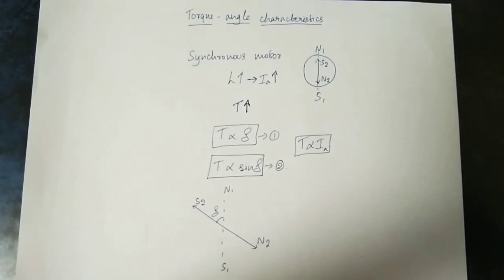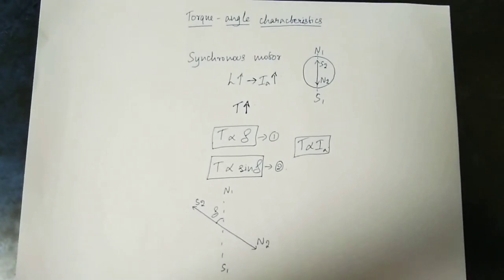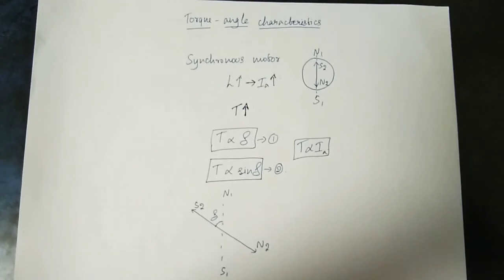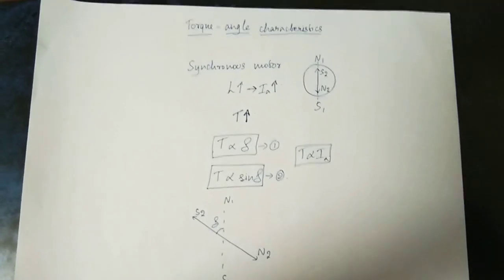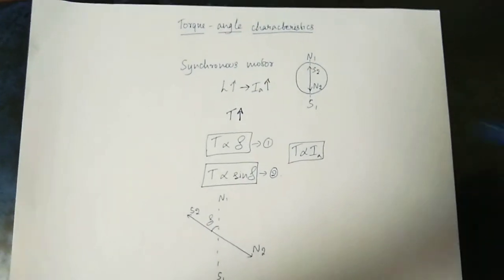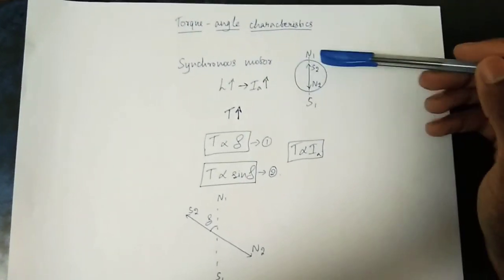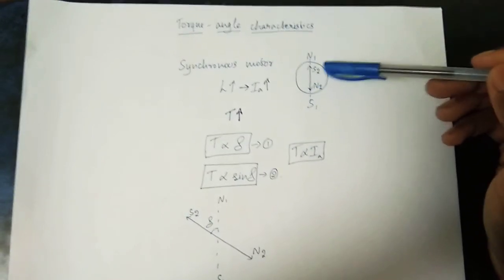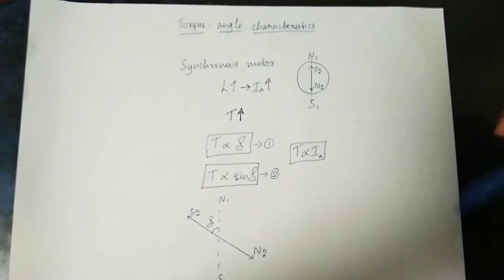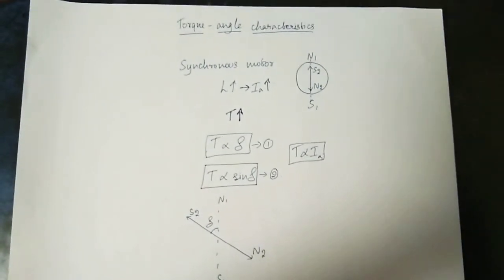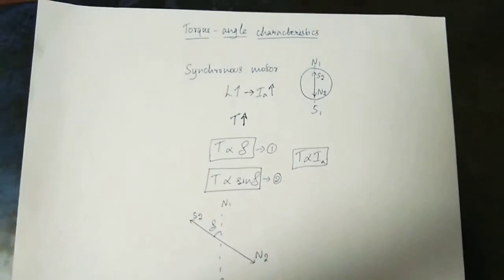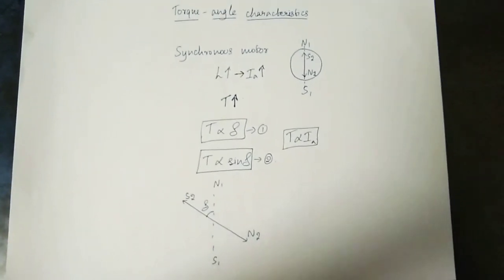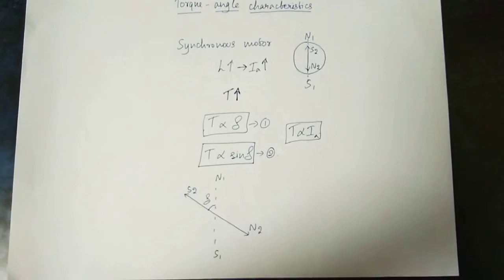The synchronous motor is unloaded and the load angle is 0. N1 and S1 are the stator. The arrow marks S2 and N2 are the rotor. The two axes are parallel — this is called axis coincidence. This is not a load angle.